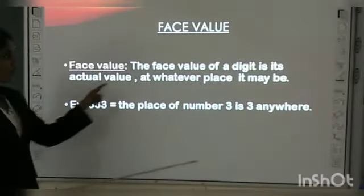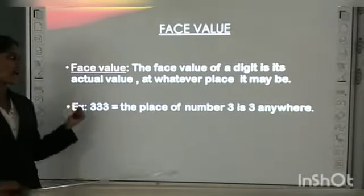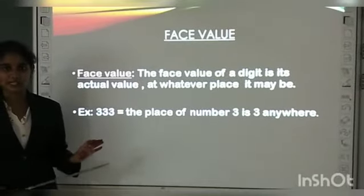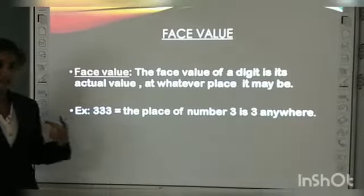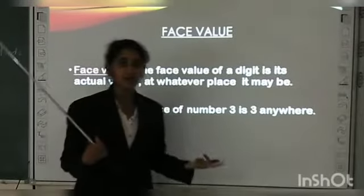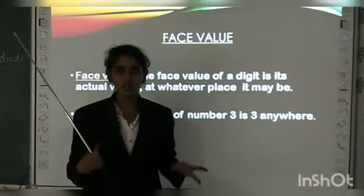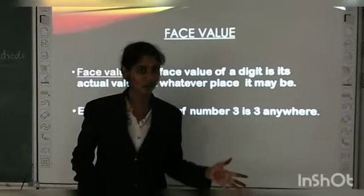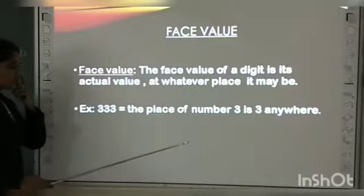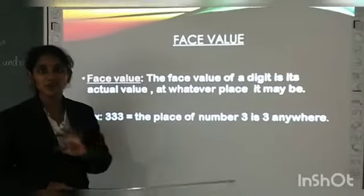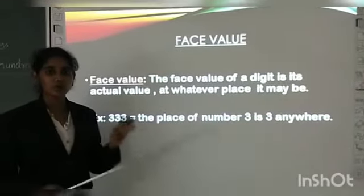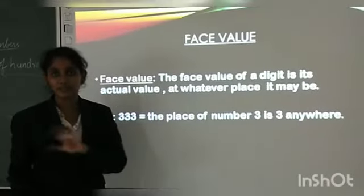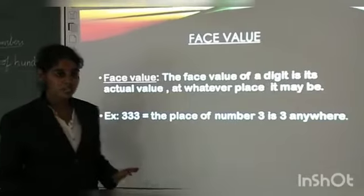Face value. The face value of a digit is its actual value at whatever place it may be. It won't change from place. If I change my place from here to here, my place will be changed, right? But I am the same. In the same way, the actual number doesn't change. Only the place value will change. The face value of that number will not be changed.